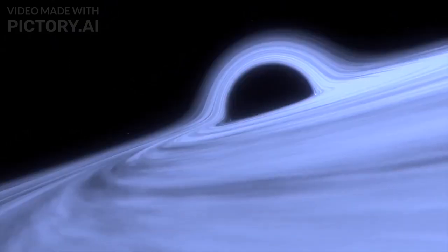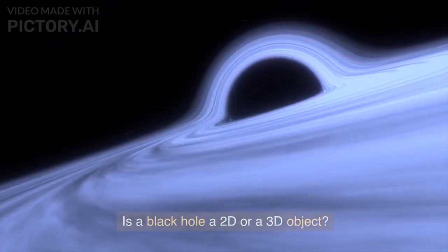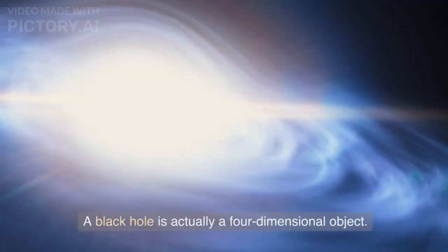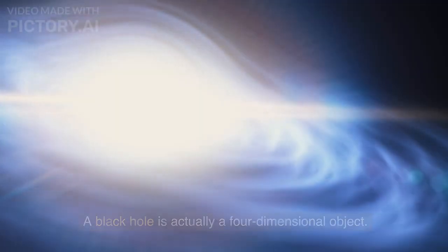Welcome back to Knowledge Hub. Is a black hole a 2D or a 3D object? A black hole is actually a four-dimensional object.